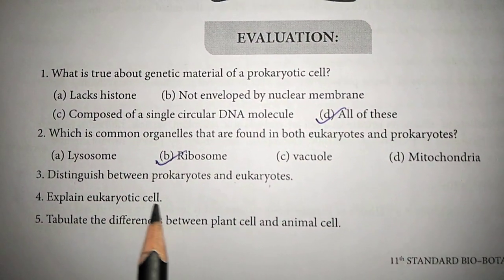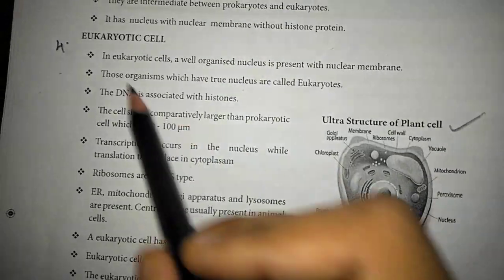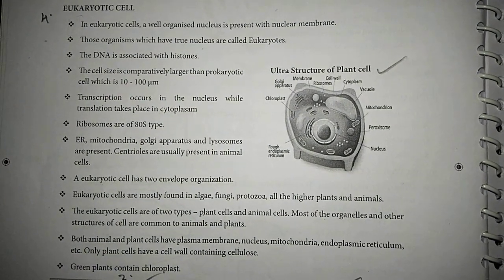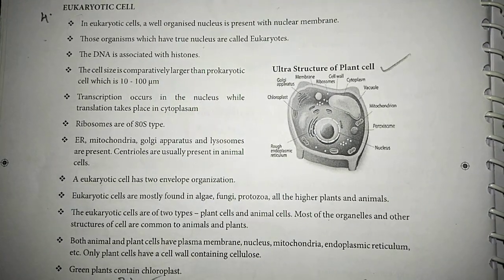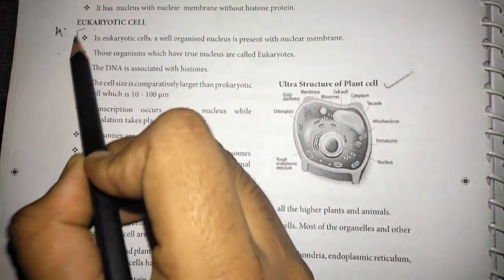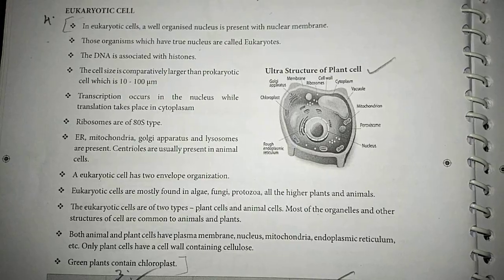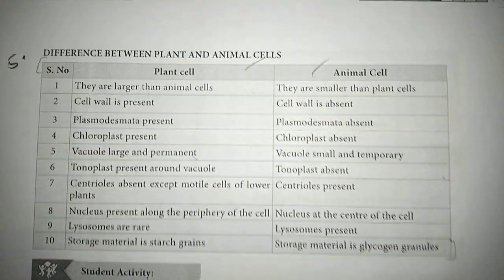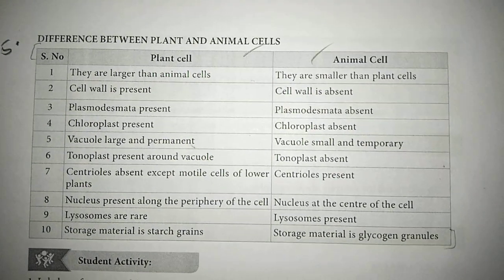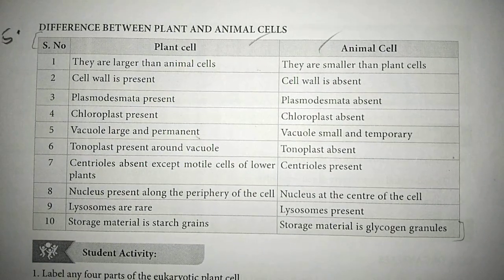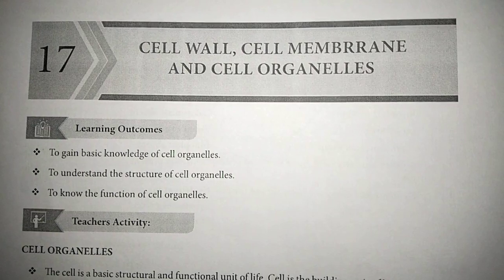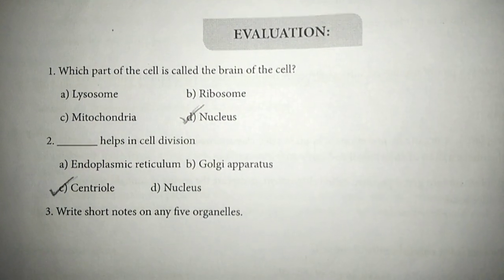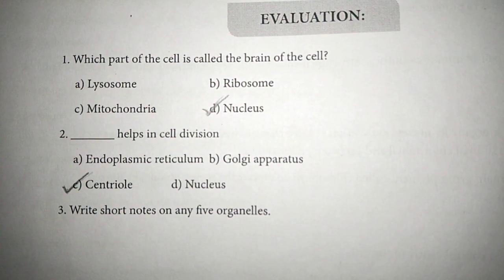Fourth one: explain eukaryotes with diagram and explanation. Next, fifth one: table — the difference between plants and animals. This table column — this is any five organelles here.